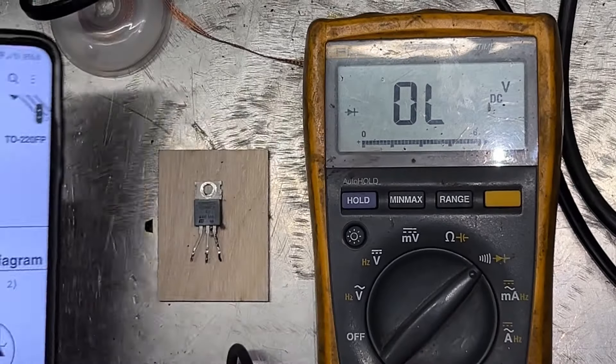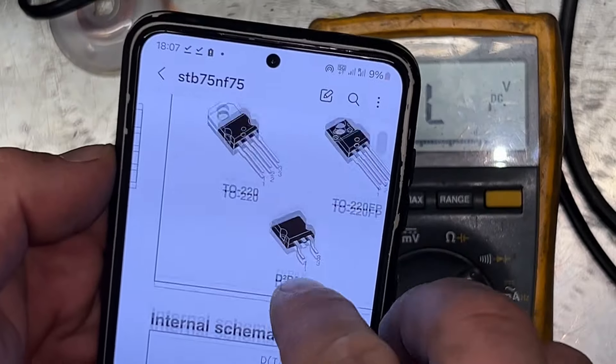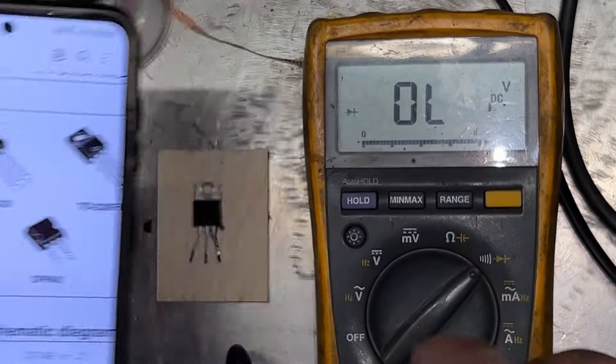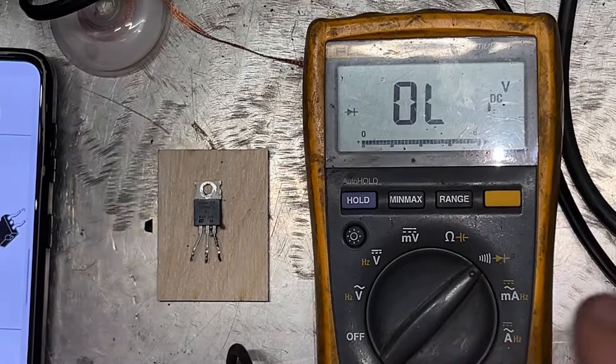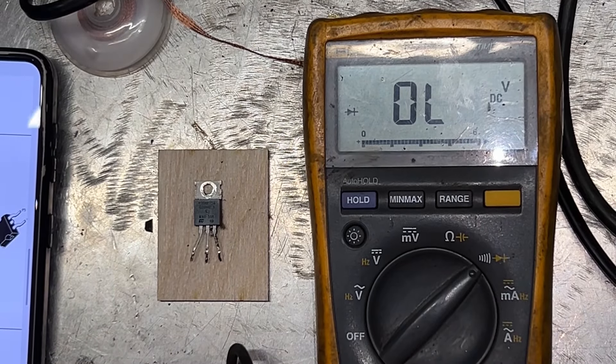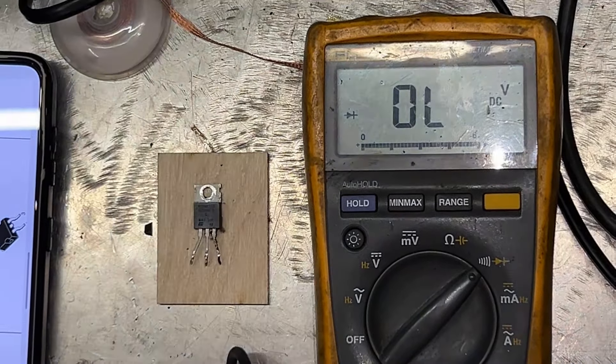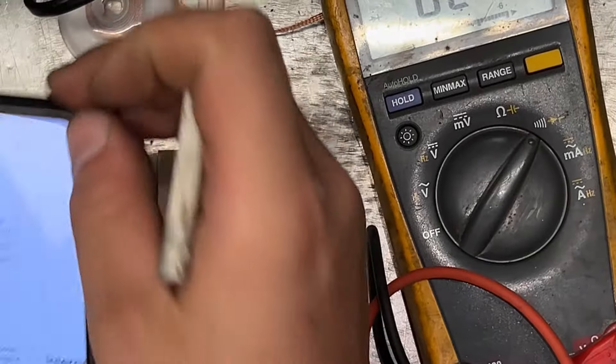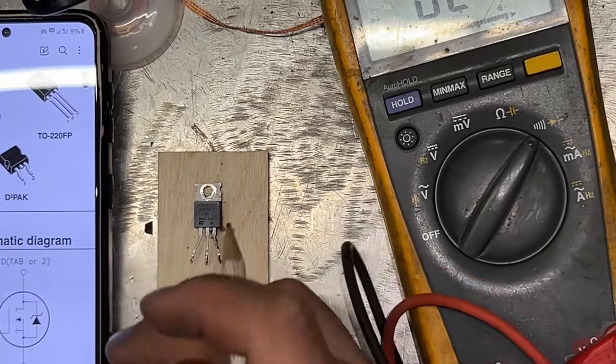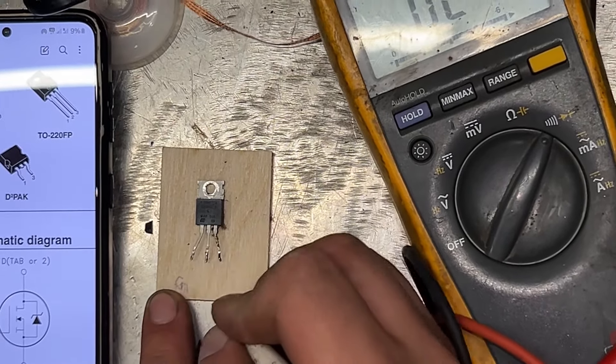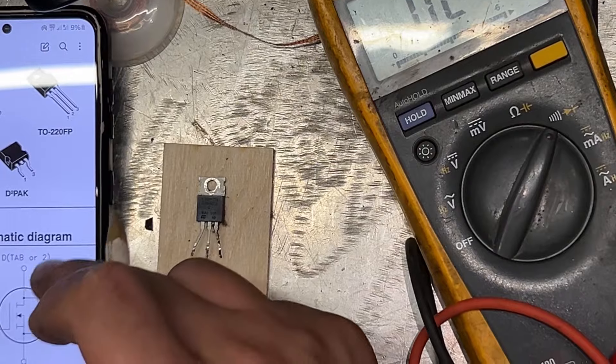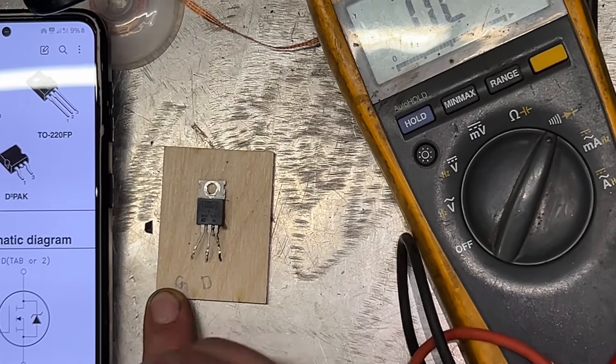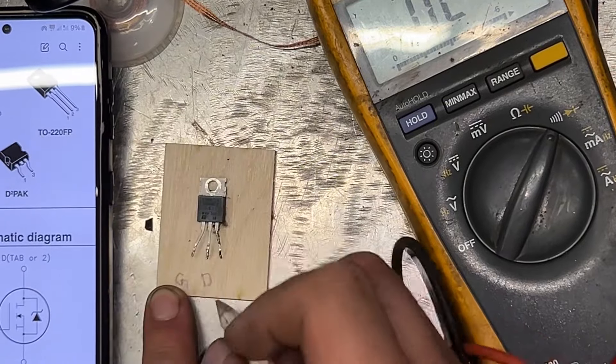One is gate. So we'll write it down. You can remember it, but just for the purpose of the video, we're going to write it down. One is going to be gate. Two is the drain. And three is the source.